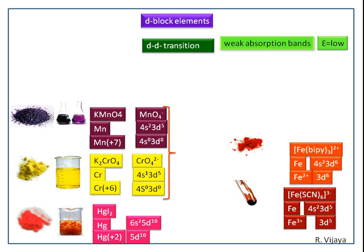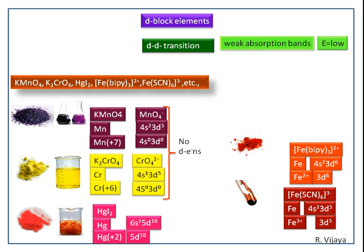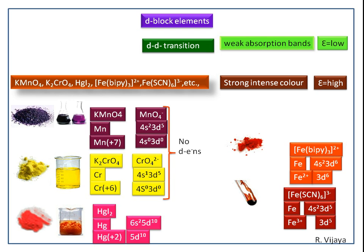The first two compounds have no d-electrons. Yet these compounds are very intensely colored with high epsilon values. We can surely say that the first two compounds cannot have d-d transitions, because potassium permanganate and potassium chromate have no d-electrons.